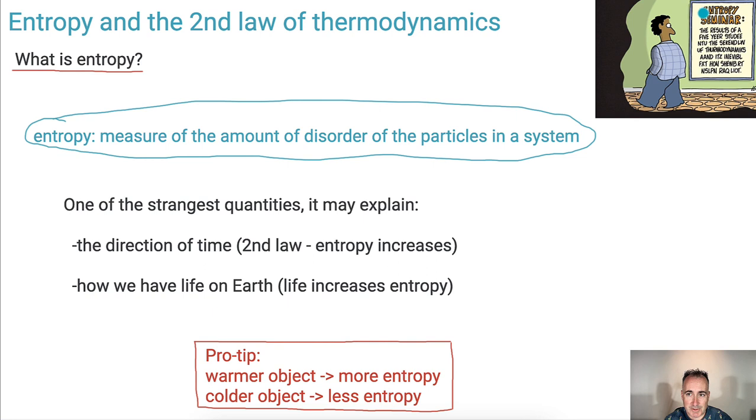I like this when I hear entropy seminars, because things just get worse because they're more disordered. But what I like about it is it's very strange, first of all, but it might actually explain the direction of time because it's irreversible. It's going to explain a little bit about the second law that entropy increases. But also, it might even explain what life actually does. We actually increase the entropy. So, a nice pro tip here, just remember this, that warmer objects have more entropy because there's more random motion in warm things than in cold things. This also has to do with temperature as well.